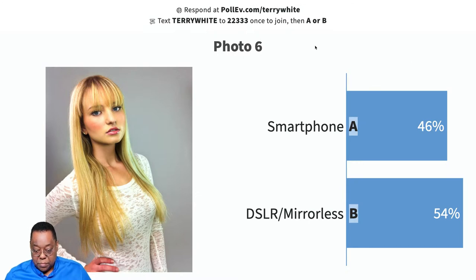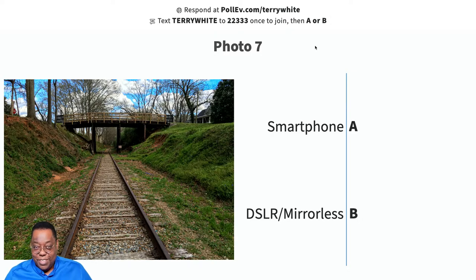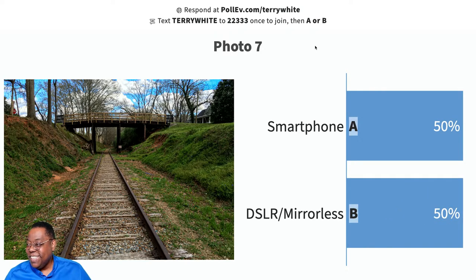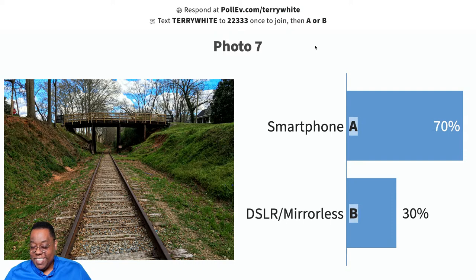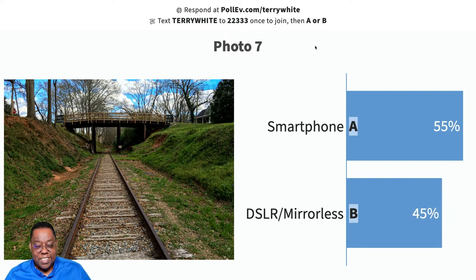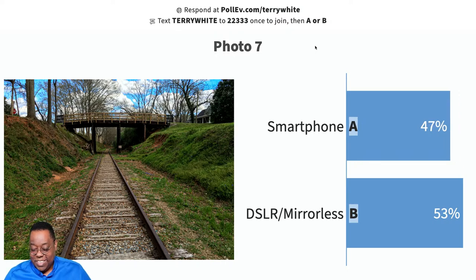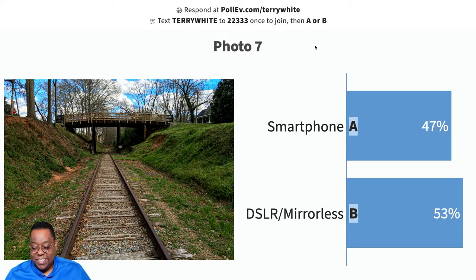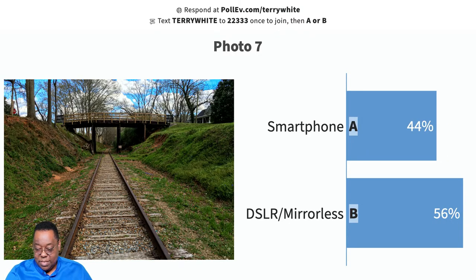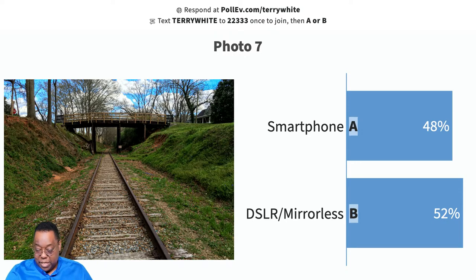Photo number seven — look at the sharpness of this one. I'll give you a hint: look at how sharp this photo is. Some of these might've been older photos. I gave you a hint — if you still guessed wrong, that's on you. Almost evenly divided: 48% smartphone versus 52% DSLR.